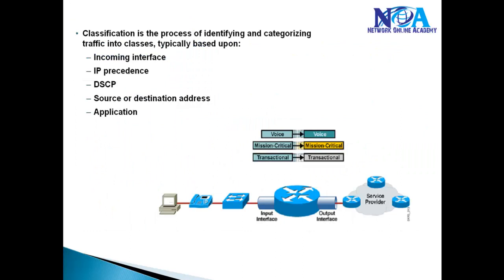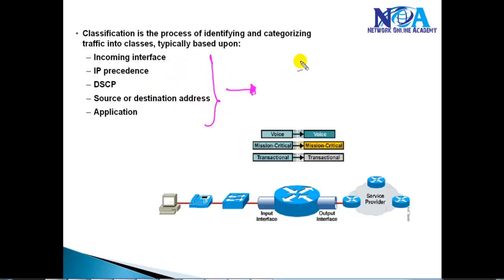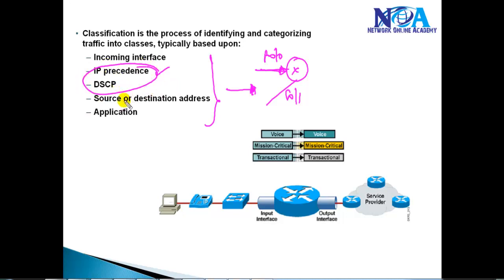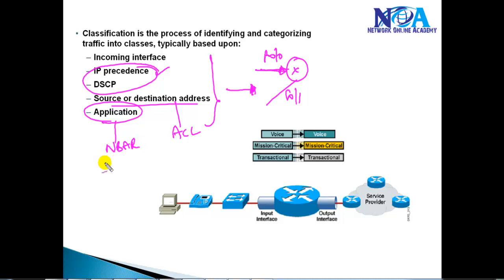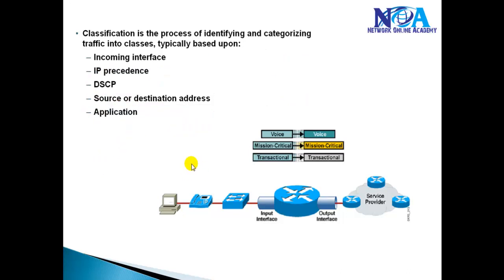Classification in CBWFQ can be done using different options. You can match traffic based on the input interface — for example, interfaces F0/0 and F0/1. You can match based on marking values like IP Precedence and DSCP, or you can write an ACL specifying source and destination. You can also use NBAR — Network Based Application Recognition — where you use match protocol to directly match HTTP or any specific protocol.